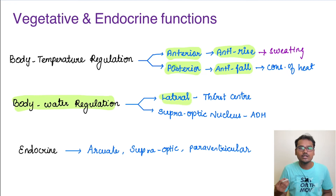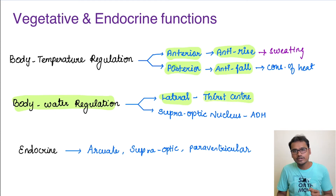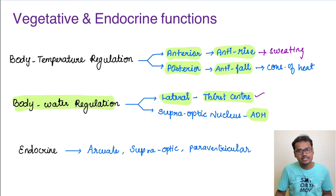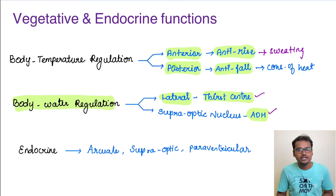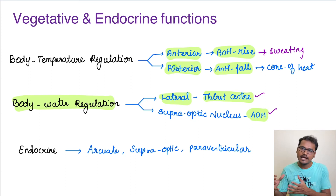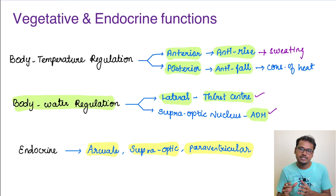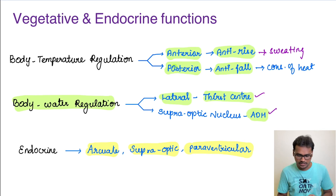For body water regulation, the lateral nucleus is involved in thirst, while the supra optic nucleus produces ADH (anti-diuretic hormone), which increases thirst and helps conserve water by reducing urinary elimination. Regarding endocrine functions, the three most important nuclei are the arcuate, supra optic, and paraventricular — they produce hormones of the anterior and posterior pituitary.